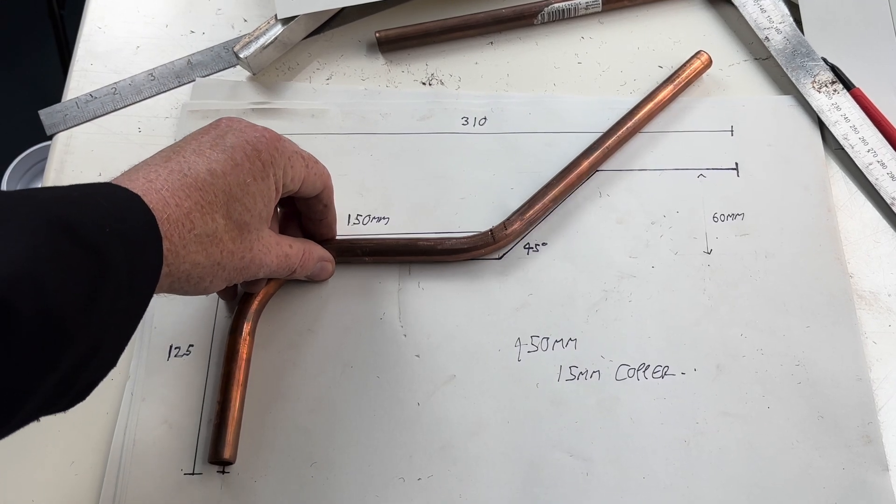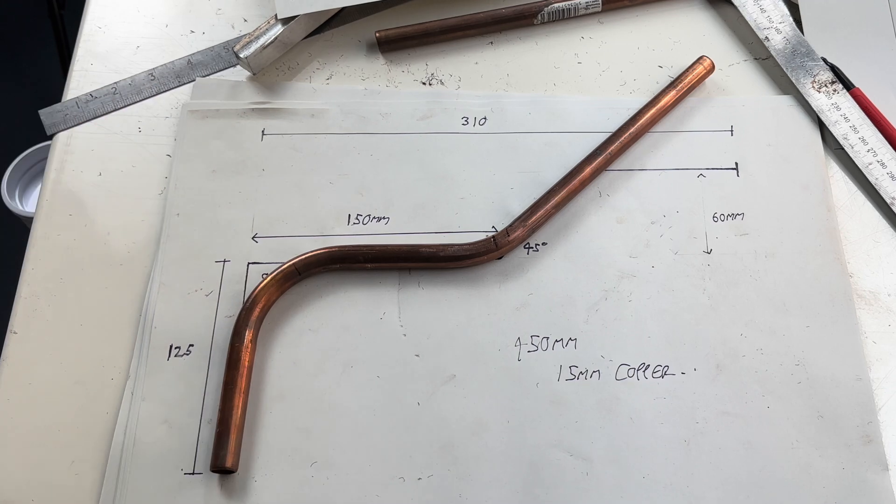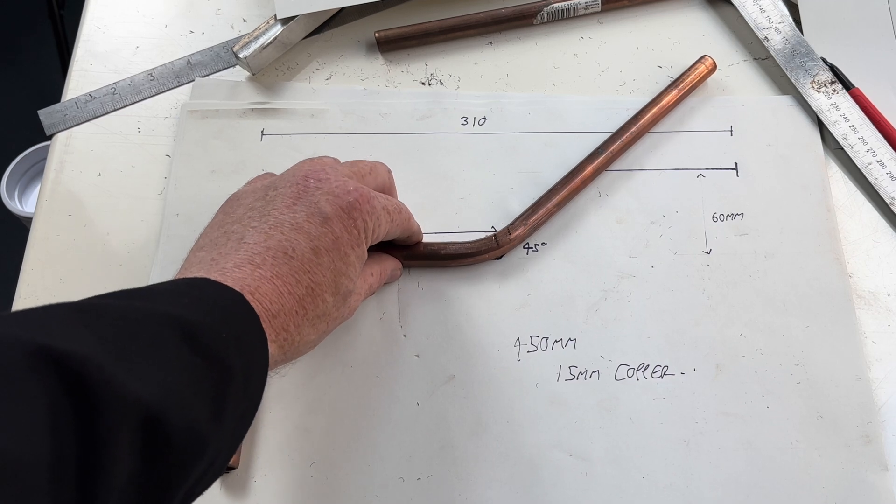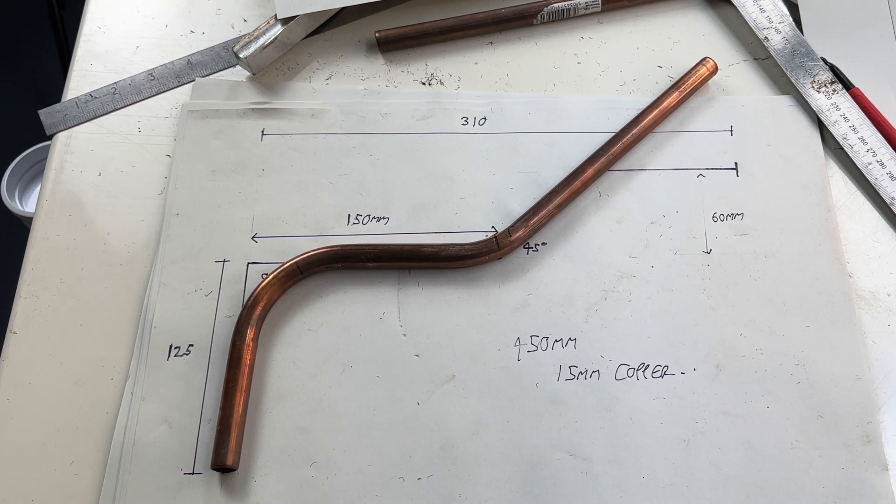Place your work back onto the drawing. You now need to bend the last 45 degree bend to make up the 60mm offset.